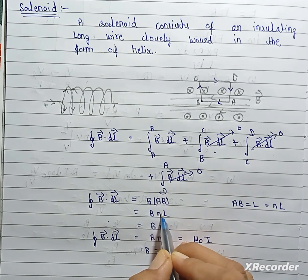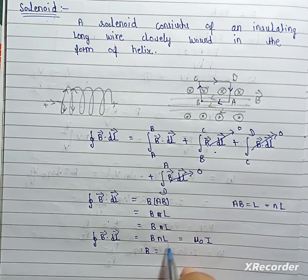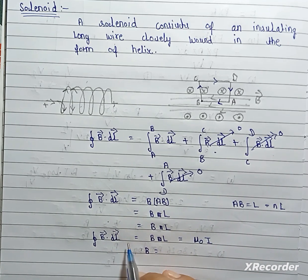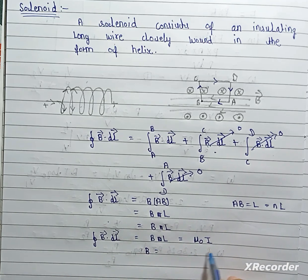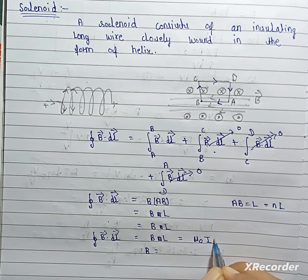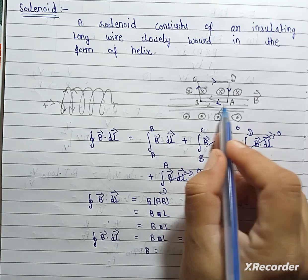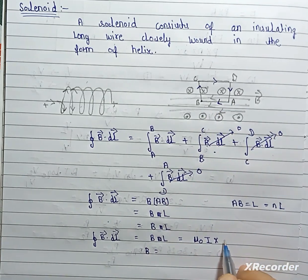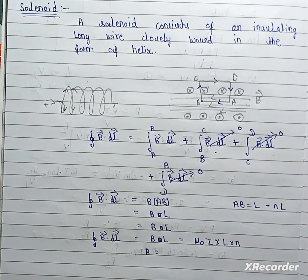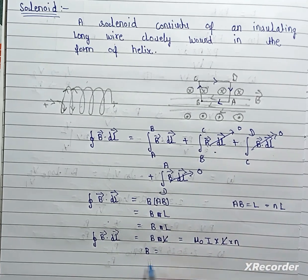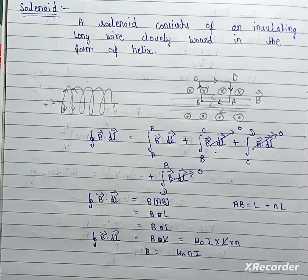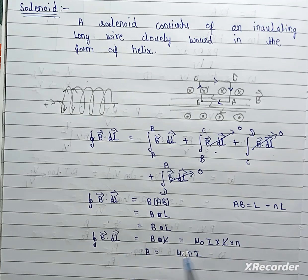From here B equal to, this is BL and BL equals mu not I, total current. For length L and number of turn n, so from here we can write B equal to mu not nI over L. This is magnetic field for a solenoid.